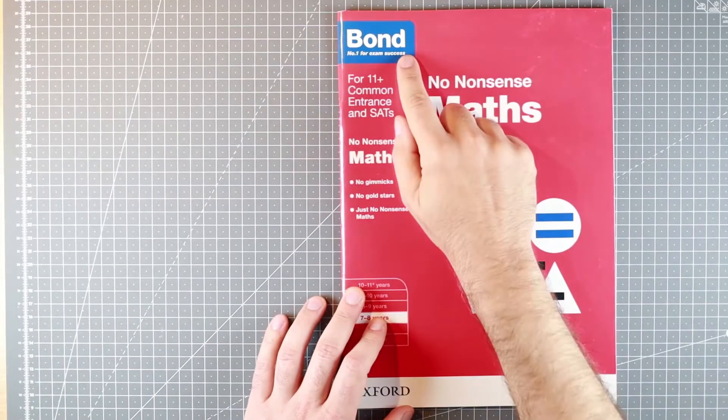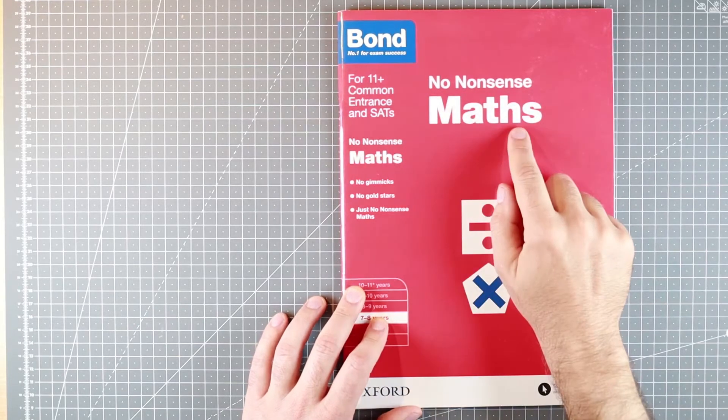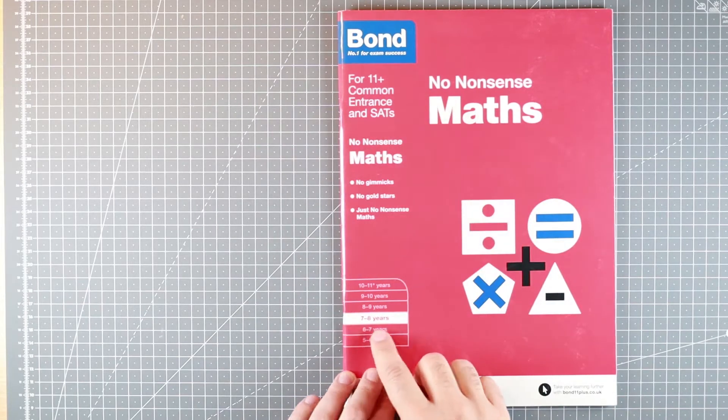Another year, another Bond movie released. Oh, this will be an endless joke. No-nonsense Maths for ages 7-8 years old.